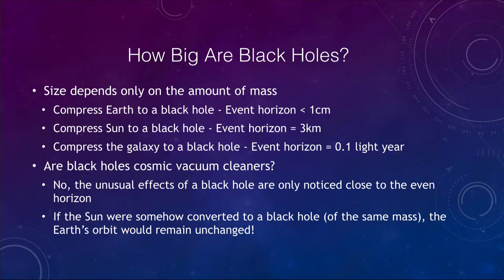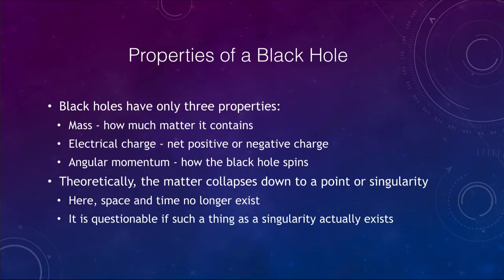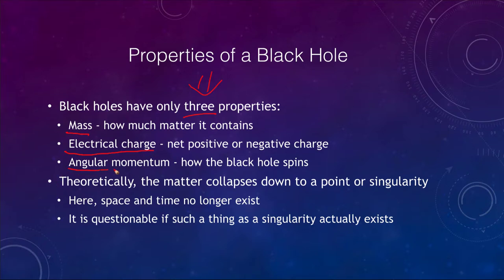Now what can we know about a black hole? That can be a very difficult thing, because black holes are very simple objects — they have only three properties. When we talk about stars we can discuss temperatures, compositions, and many other things, but black holes have only three properties: they have a mass, how much material it contains; they can have an electrical charge, if they have a net positive or negative charge; and they can have angular momentum, or spin. That's it.